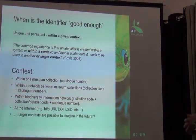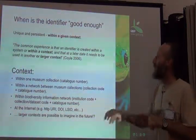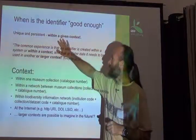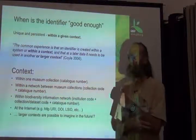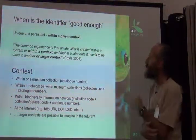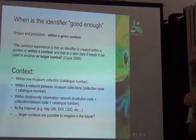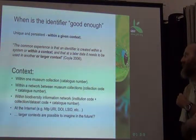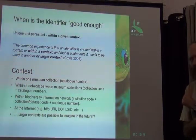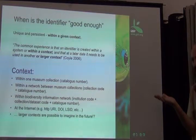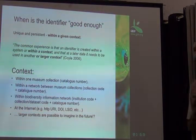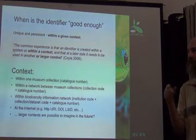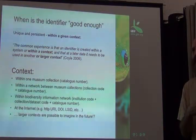Now, we need to know when an identifier is good enough. The common experience is that an identifier is created within a system or context, and at a later date it needs to be used in another or larger context. For example, in an Excel spreadsheet you might have an identifier for rows. When I worked with Moses yesterday, he had identifiers for his photos — 10, 11, and so on. Those had meaning to him: they were the significant digits on the file name for the photo, something like 'dscn-00010.jpg', so it uniquely identified it for him.